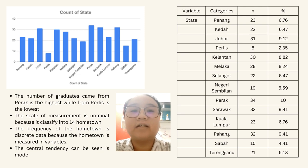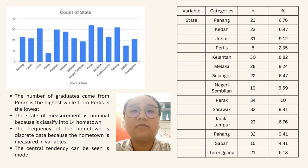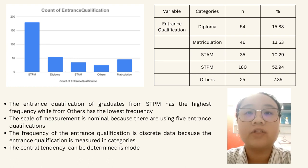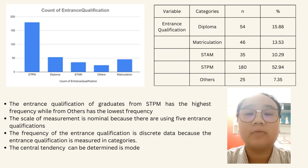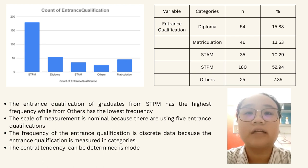Next is the frequency of state. From the graph and table, we know that the number of graduates from Perak is the highest at 10%, while from Perlis is the lowest at 2.35%. The scale of measurement is nominal because it is classified into 14 hometowns, and the frequency data is discrete. Followed by frequency of entrance qualification — graduates from STPM have the highest frequency at 52.94%, while others have the lowest at 7.35%. The scale of measurement is nominal as there are 5 entrance qualifications, and the data is discrete. The central tendency that can be determined is mode.